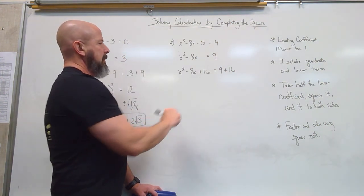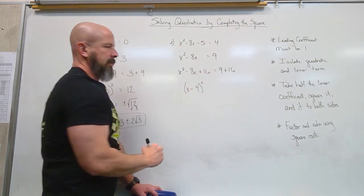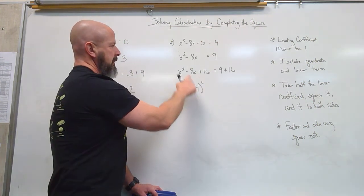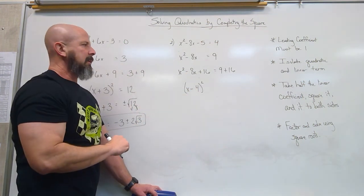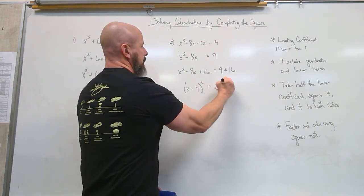Factor. This will factor to x minus 4. It's that perfect square. 4 from the 16. No, it was minus. So 16 enabled me to factor it that way. Right side is 25.